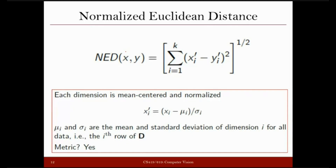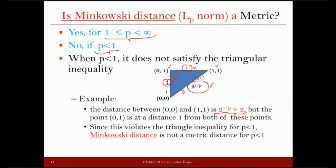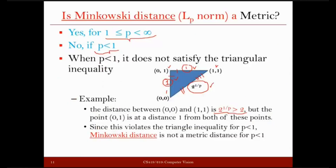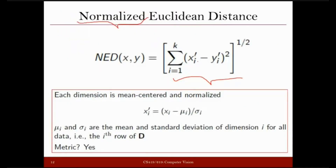The normalization formula for dimension i computes xi-prime as xi minus the mean (mui) divided by the standard deviation (sigma i). The variance tells us the range in which values are distributed: high range means high variance, low range means low variance. Where variance is low (heights), you divide by a small value; where variance is high (weights), you divide by a large value. This maintains a balance between features ranging in different ranges, preventing one feature from dominating the distance calculation.